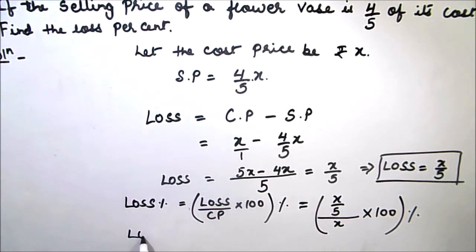So loss percent will be equal to x by 5 divided by x, which is multiply by 1 by x times 100 percent.